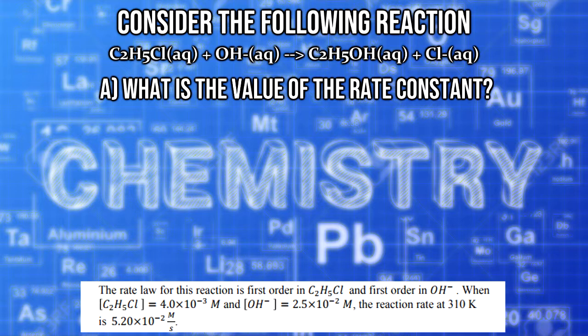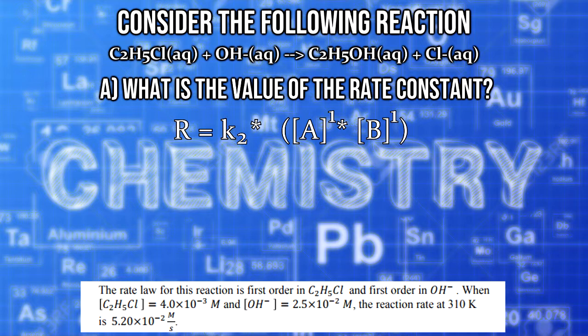We can see that both reactants are first order reactions, which means it is a second order reaction overall. We have to use the following formula to solve this task. The concentration is given in the task. X and Y are the order. In this example, we only have first order reactions, that's why we use the exponent 1 instead of X and Y.